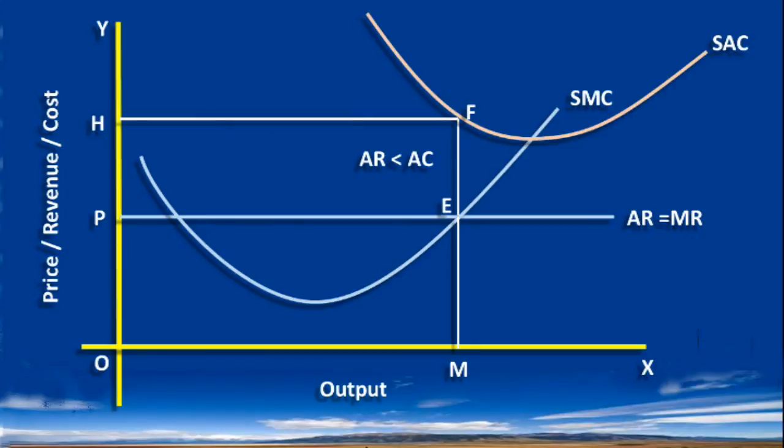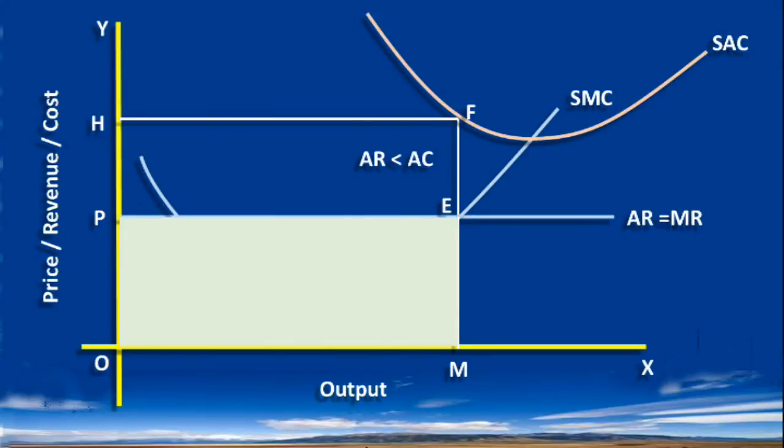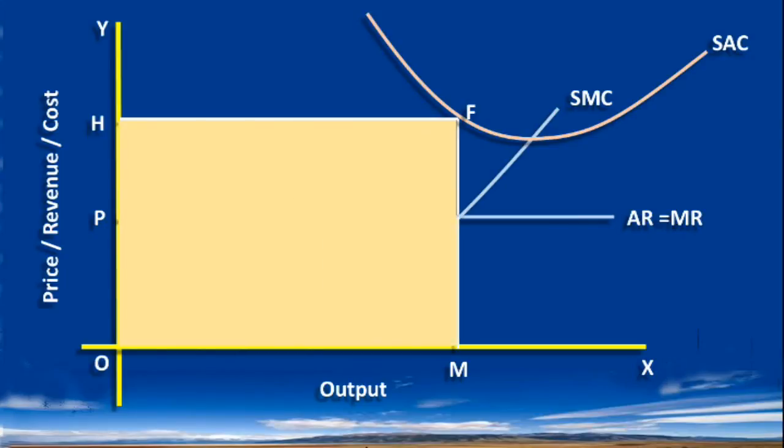Loss can also be calculated like this. AR times output is total revenue. In the diagram OP multiplied by OM. Area OPEM is total revenue. AC times output is total cost. In the graph OH multiplied by OM. Area OHFM is total cost. OHFM minus OPEM is the loss. Area PHFE represents loss.